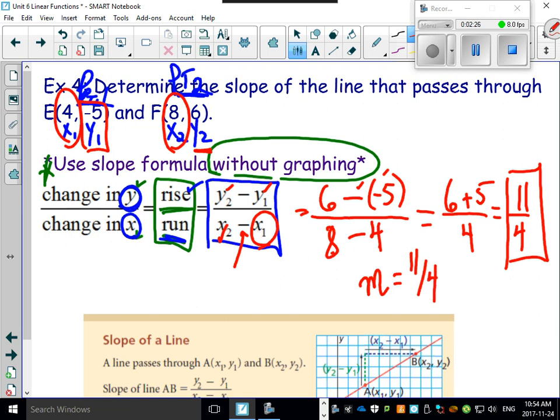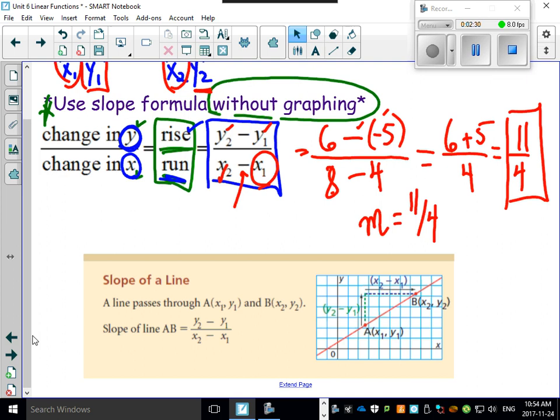So look back at the definition here - this is right out of your textbook, slope of the line. Look what they did: they label x1, y1, x2, y2, and there's that wonderful formula that's on your formula sheet. That just means y2 minus y1, x2 minus x1 - there's your rise, there's your run. That's how it works.